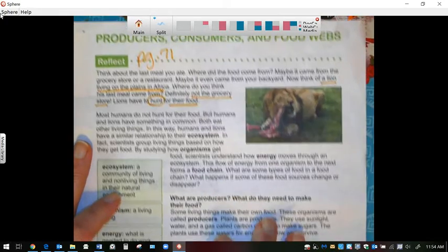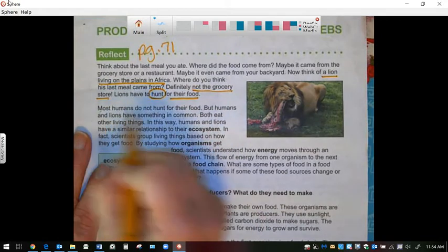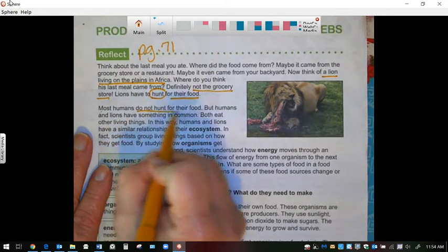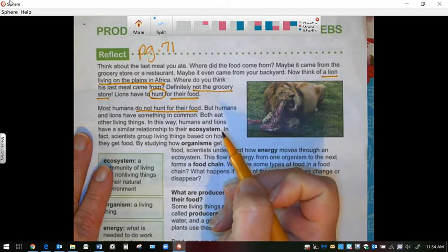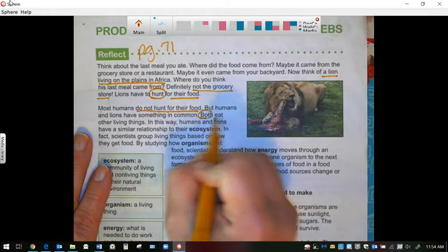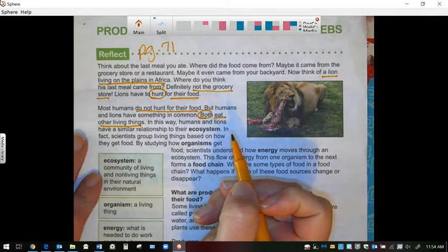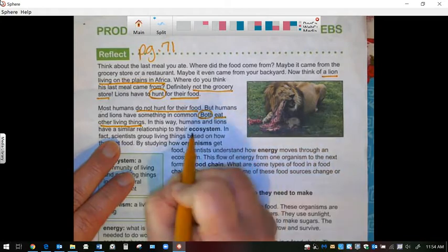Most humans we do not hunt for our food. But humans and lions they have something in common. Both of them eat other living things. In this way humans and lions have a similar relationship to their ecosystem.